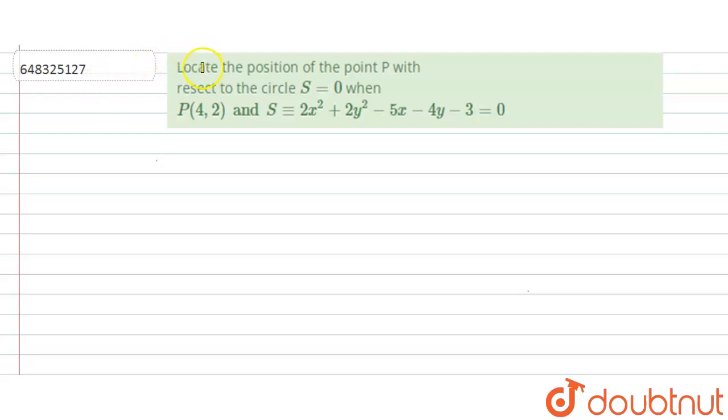Hello all, so today we have a question in which we have to locate the position of the point P with respect to the given circle S = 0. When we have the point P is (4,2) and we have the equation of the circle is S = 2x² + 2y² - 5x - 4y - 3 = 0.